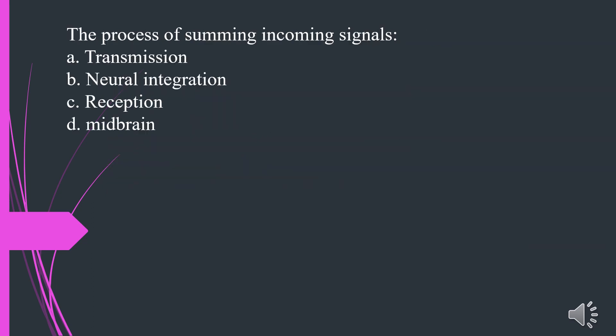Make sure you know the sequence of these processes. The process of summing incoming signals is: A. Transmission. B. Neural integration. C. Reception. D. Midbrain. The answer is B. Neural integration.